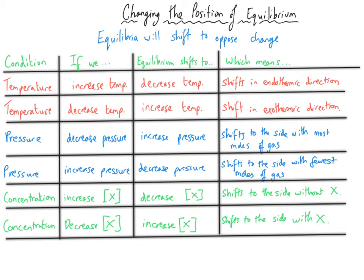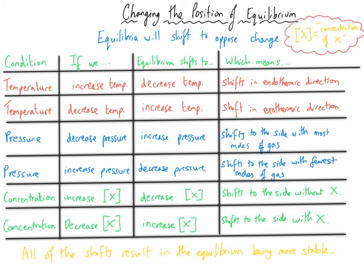If we increase the concentration of a particular chemical, the equilibrium will shift in the other direction to decrease its concentration. Conversely, if we decrease the concentration, the equilibrium shifts to make more of it — towards the side that contains that particular chemical. Note that square brackets around a formula, such as [X], means 'concentration of chemical X'. That's a shorthand notation which is fine to use in an exam.